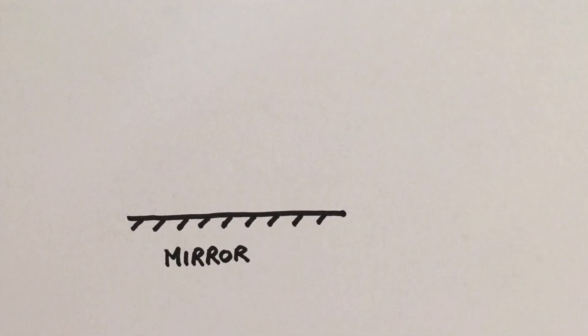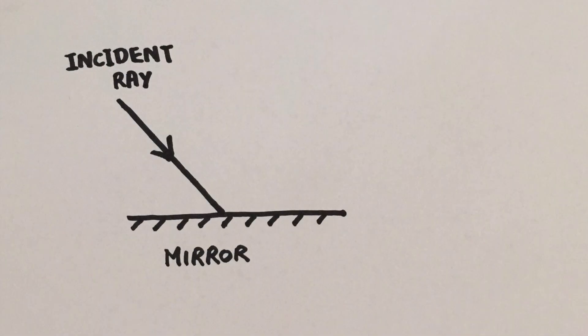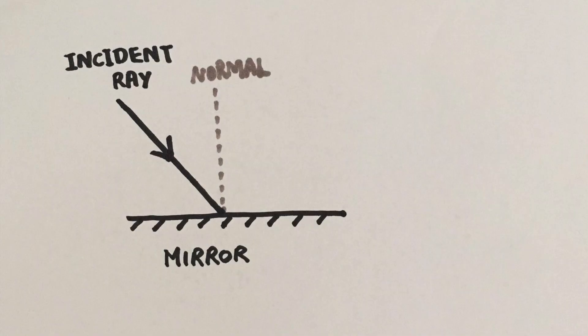A plane mirror is a mirror that is flat. The ray of light that strikes the mirror is known as the incident ray. Before we can draw the reflected ray, we have to draw what's called the normal. The normal is an imaginary line that is perpendicular to the plane of the mirror.